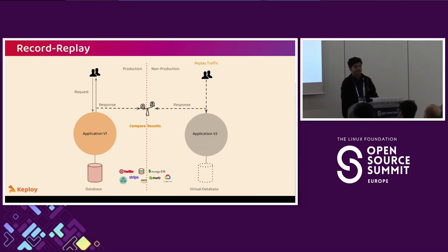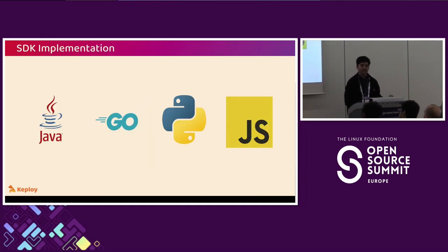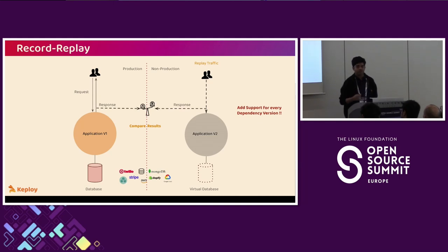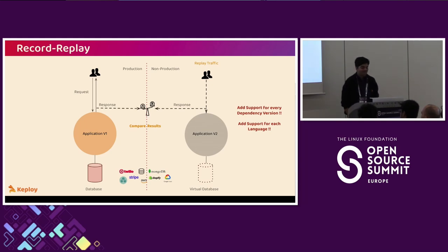One challenge we faced early on was SDK implementations — we were building SDKs for each language and had to add protocol dependency wrappers for each one. This was hard from both a DevX and UX perspective: we had to add support for each framework, create SDKs for each language, and ensure compatibility with new releases. Java was particularly challenging — what worked in Java 15 didn't work in Java 17, and by the time we stabilized Java 17, people had moved to Java 21.